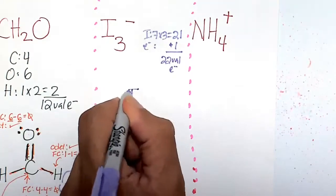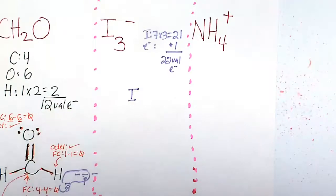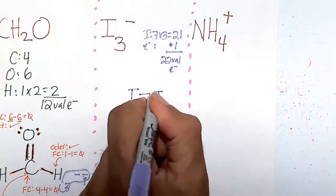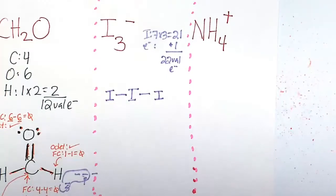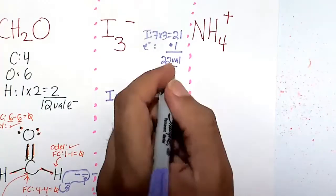Well, there's no dispute on what will be our central atom. So that's going to be I. It's going to be bound to one I, and then it's going to be bound to another I. But the issue becomes with lone pairs.